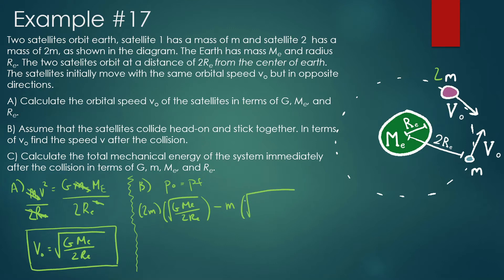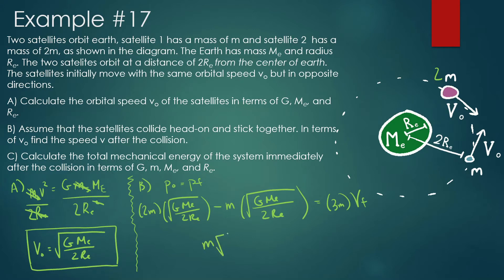Especially when dealing with space, direction becomes very interesting. We have G, mass of Earth, divided by 2r_E for each term. When they collide and stick together, both masses combine to be 3m — 2m plus m is 3m — and we're looking for the final velocity. We can add like terms, so this becomes m times the square root of G·M_E over 2r_E. Divide the whole thing by 3m. The masses cancel out, and this gives us v_final.